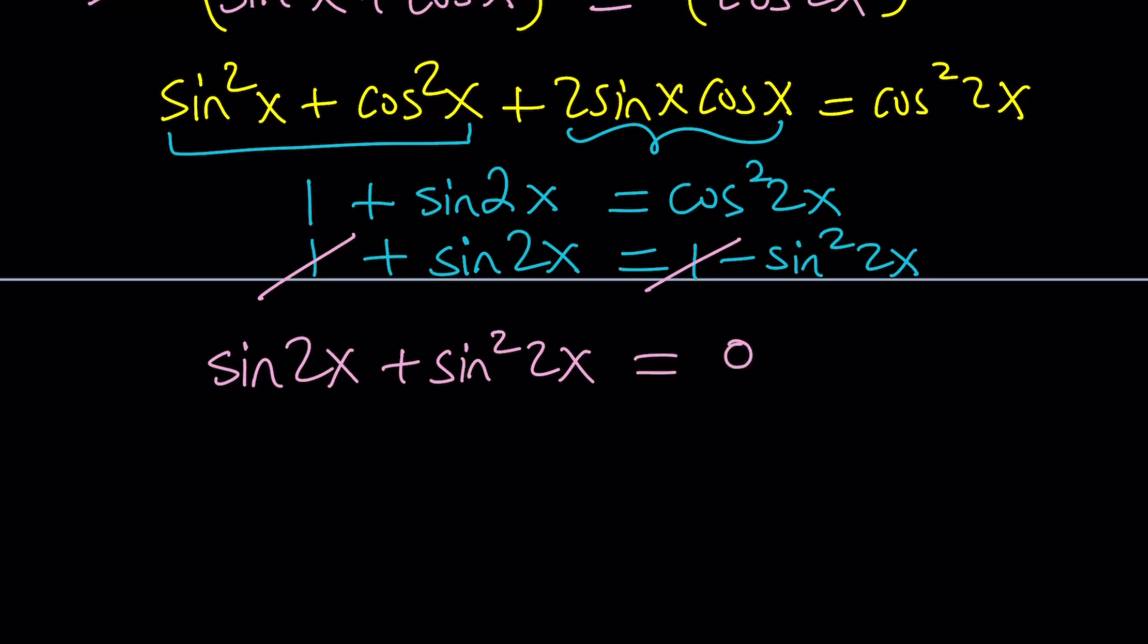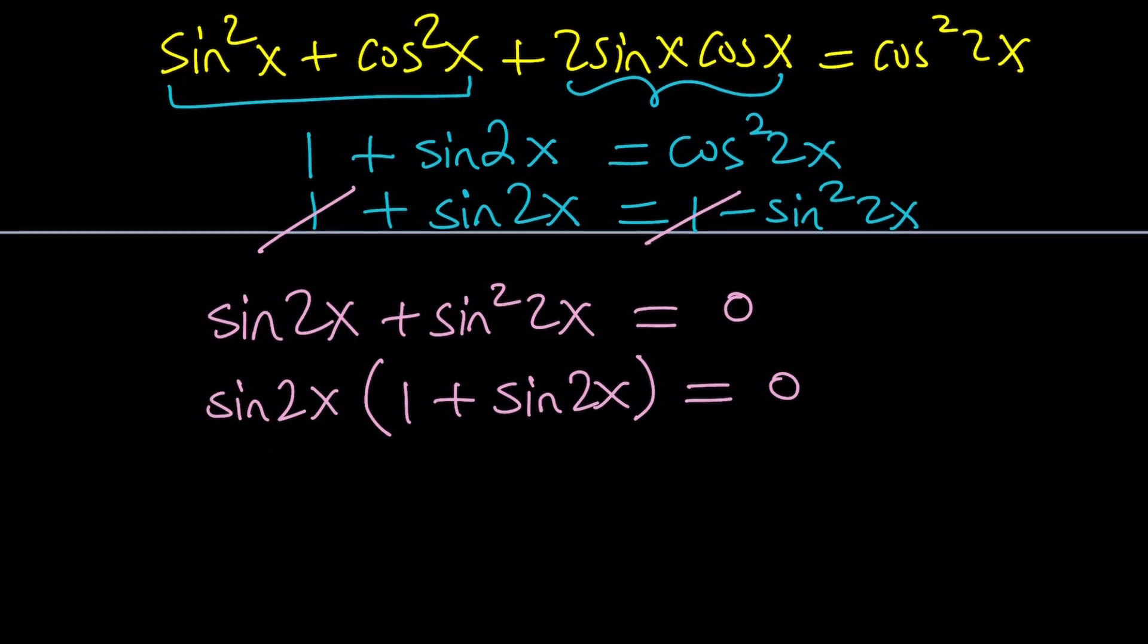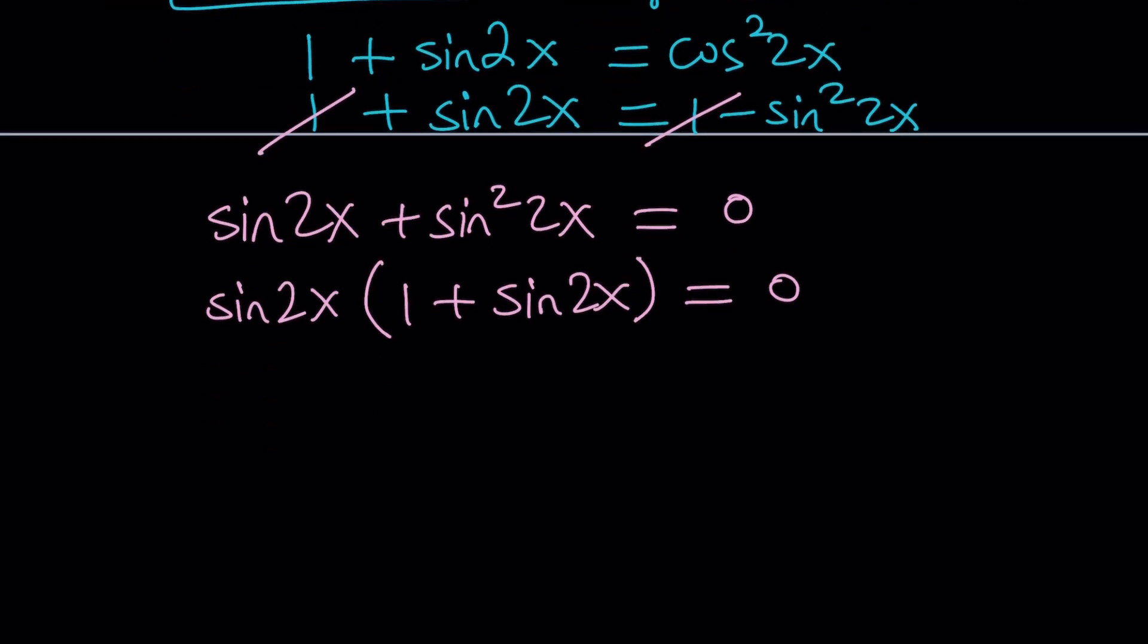Now how do you solve this equation? Easy, by factoring. Since we have a common factor, which is sine 2x, we can take it out. And 1 plus sine 2x will be the other factor. And now we have the zero product property. And this tells us that sine 2x can be 0.